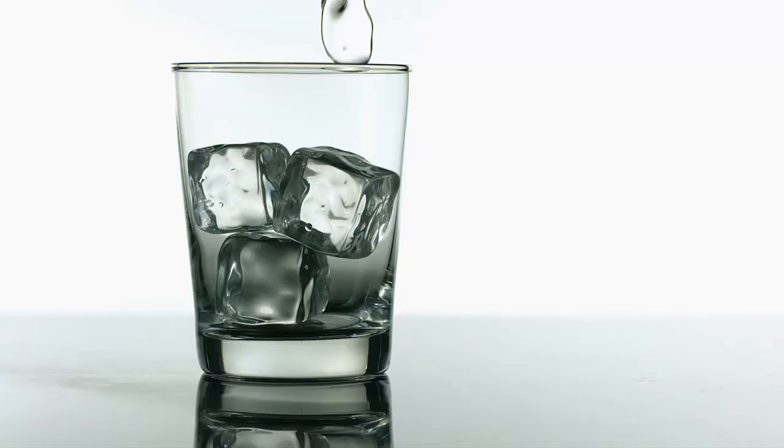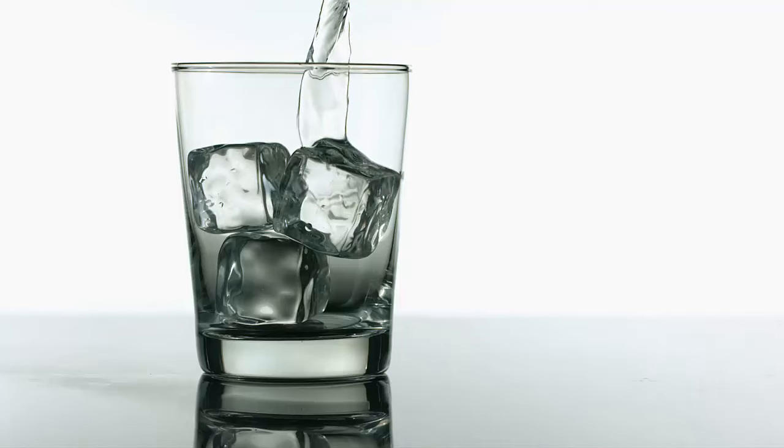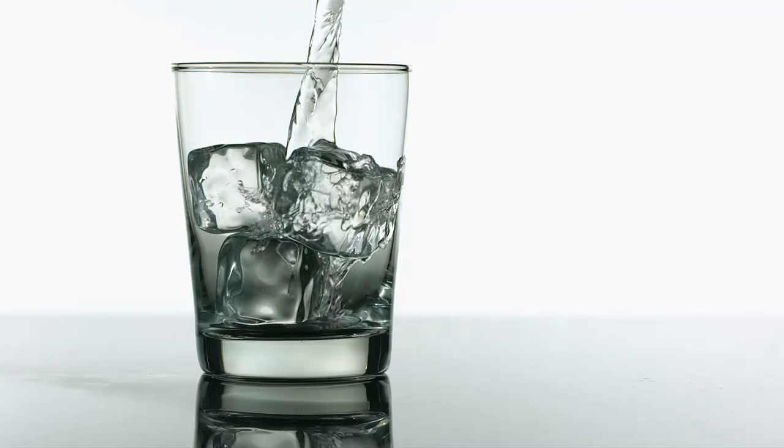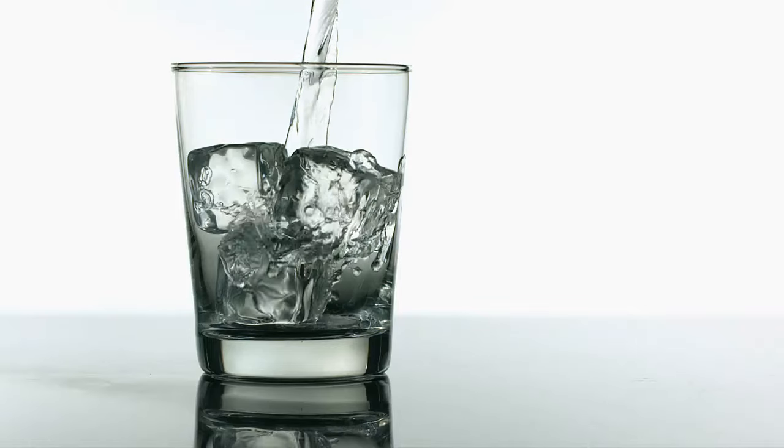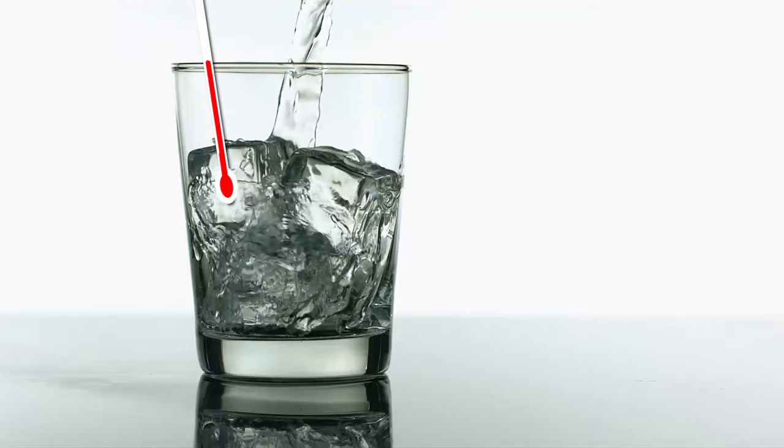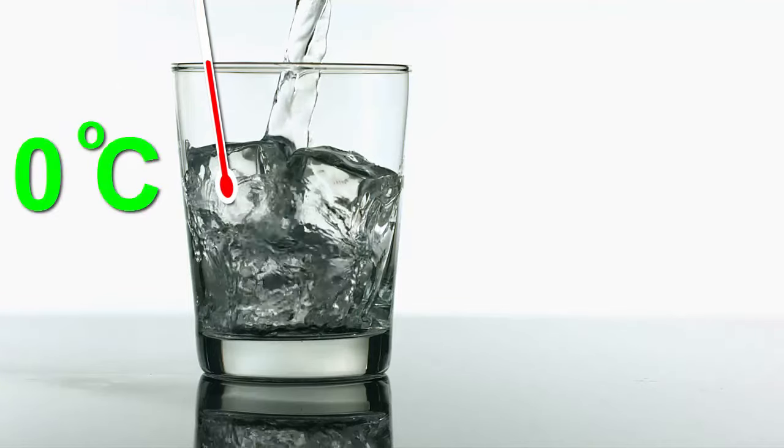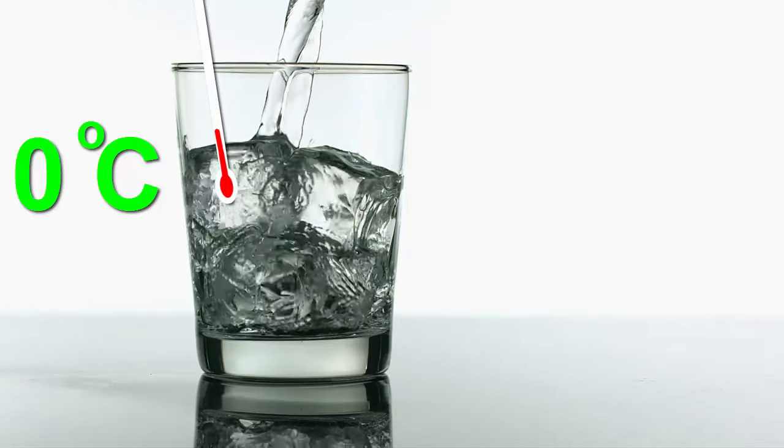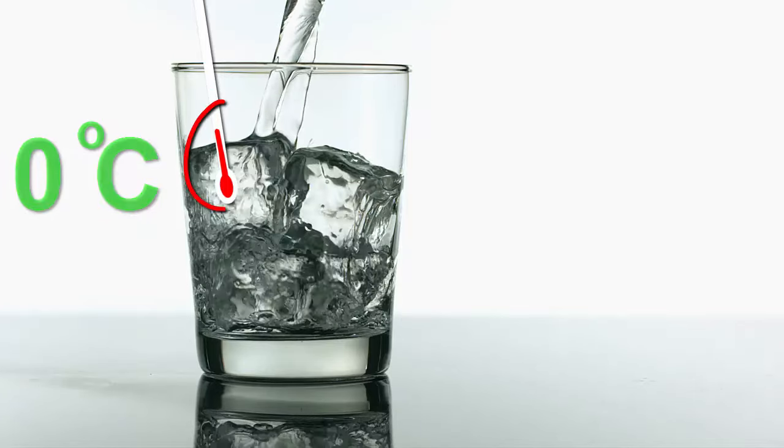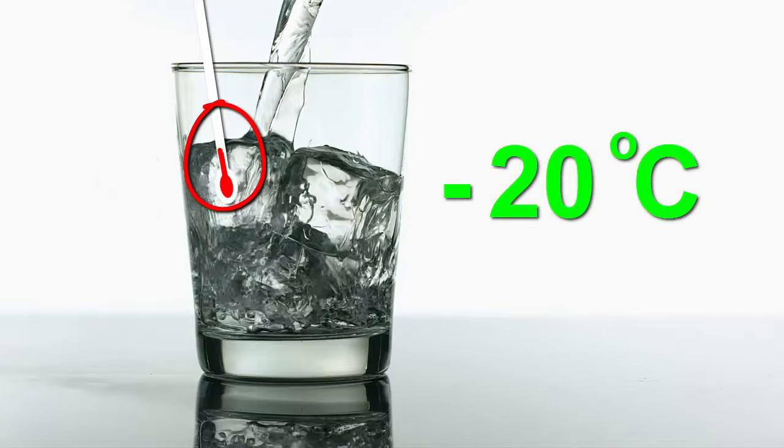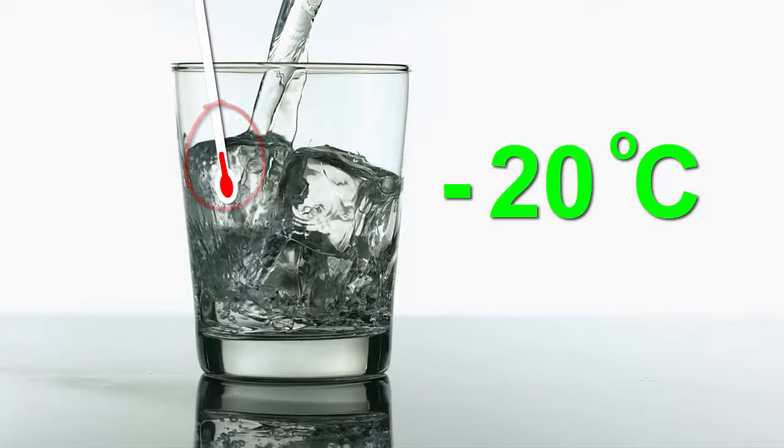We can usually change a substance from a solid into a liquid and then into a gas by heating it up, and make it go back to a liquid and then into a solid again by cooling it down. For example, putting water into your freezer will turn it into solid ice when it cools to 0 degrees Celsius. Once it's frozen, the ice will get even colder and might get down to minus 20 degrees Celsius inside your freezer. That's 20 degrees below zero.